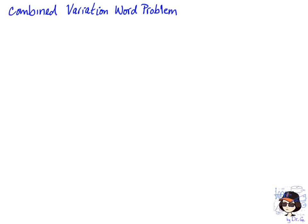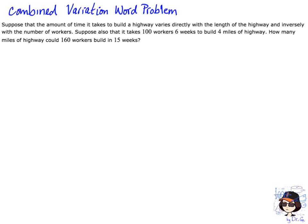In this video we're going to learn how to solve a combined variation word problem. The problem says: suppose that the amount of time it takes to build a highway varies directly with the length of the highway and inversely with the number of workers. Suppose also that it takes 100 workers six weeks to build four miles of highway. How many miles of highway could 160 workers build in 15 weeks?